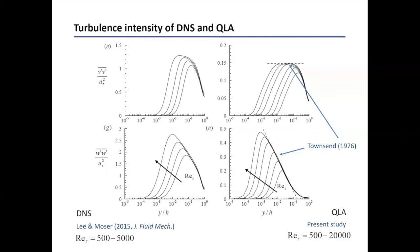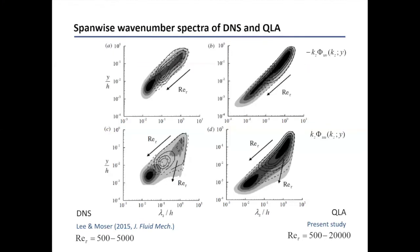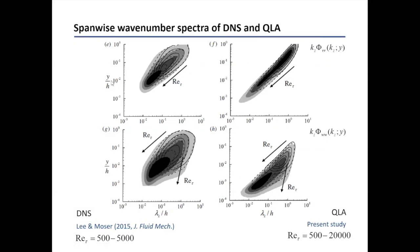You can also check other velocity fluctuations: v-squared again shows exactly the same qualitative trend, and w-squared also shows exactly the same qualitative trend. Checking the spectra — the left column shows the spanwise wavenumber spectra from DNS, and the right column shows the spanwise wavenumber spectra for Reynolds stress and streamwise turbulence intensity from the quadrilinear approximation. Everything shows an exact qualitative match. The same is true for the spectra of the wall-normal velocity fluctuations and spanwise velocity fluctuations.